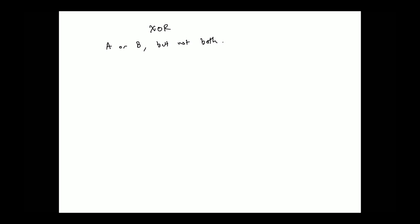Circuit-wise, the way we can think of this — what is the top left gate? That's an OR gate. This is a NAND gate, and this is an AND gate.